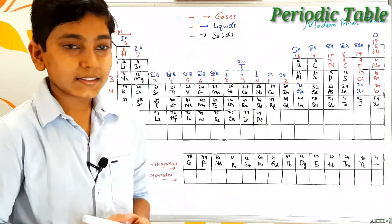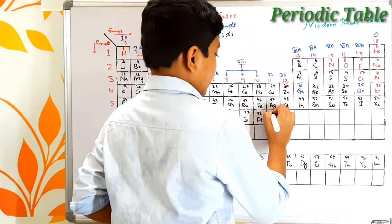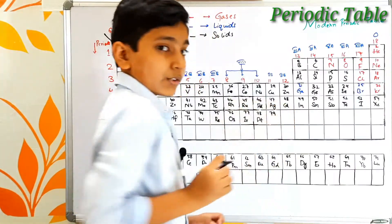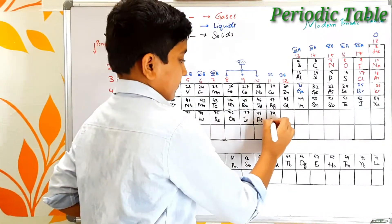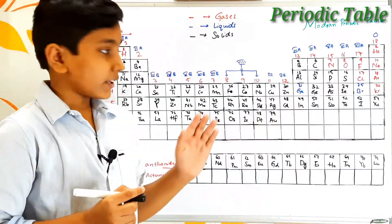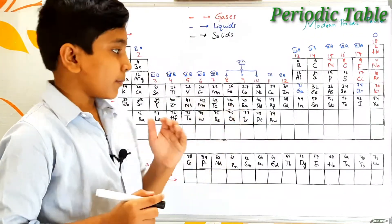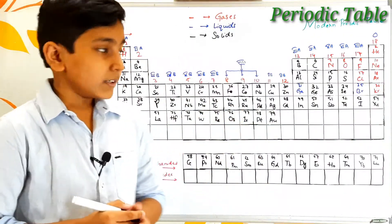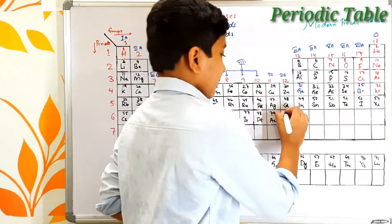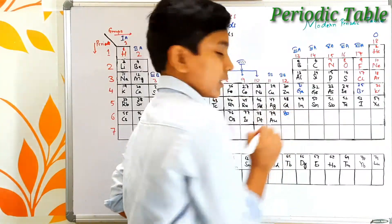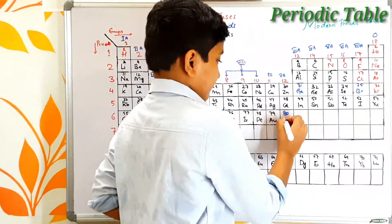The next element is atomic number 79 which is gold — its symbol is Au, which comes from the Latin word aurum. Atomic number 80 is mercury — its symbol is Hg. Mercury is a liquid metal.